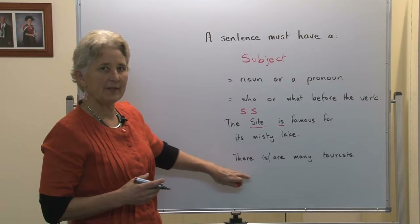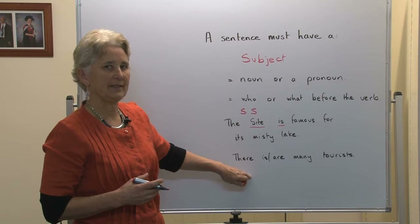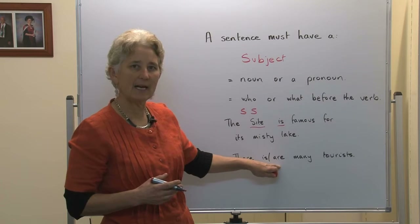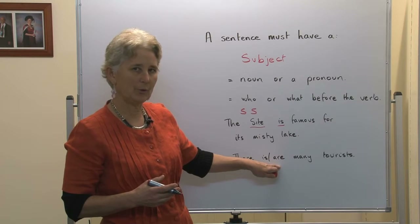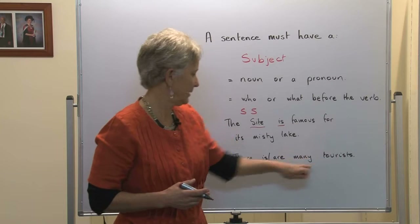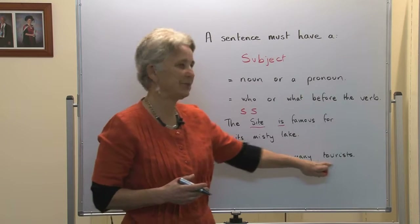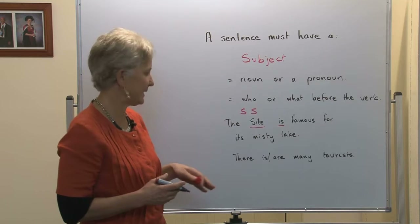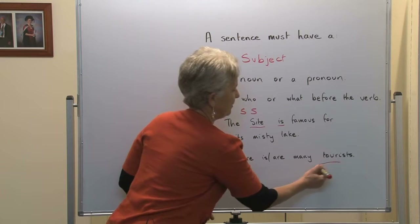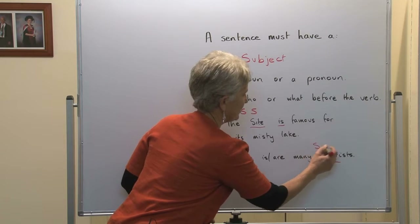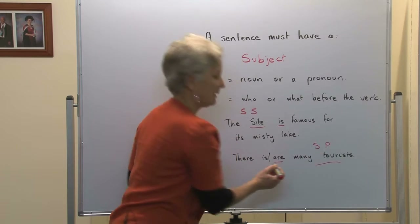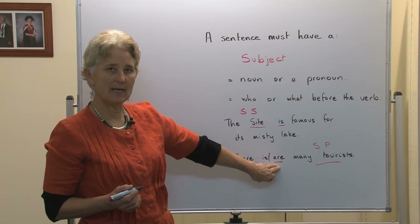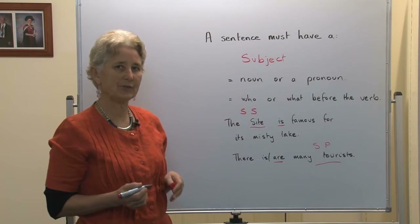I want you to watch out for the 'there is / there are' constructions. In this case, the grammatical subject comes after the verb. For example: there are many tourists. Many tourists is the grammatical subject of this sentence. It is plural, so it must take 'are'. There are many tourists.